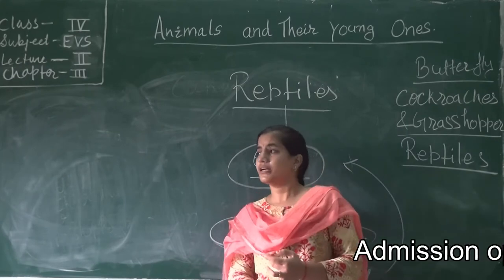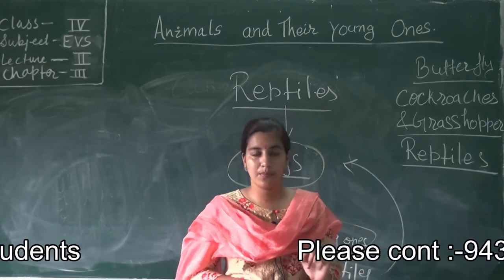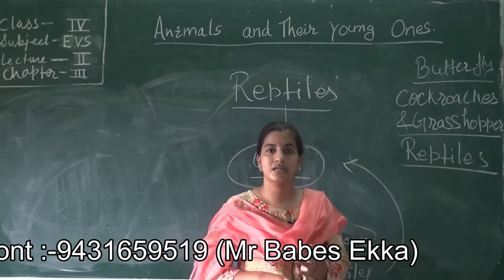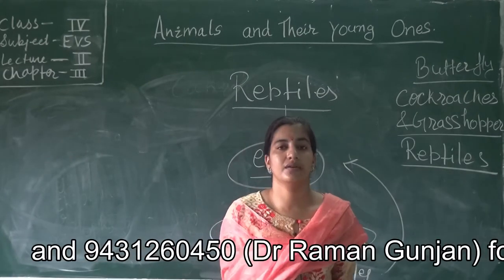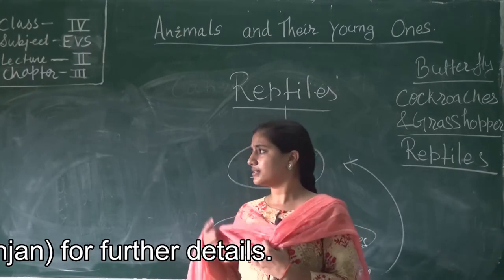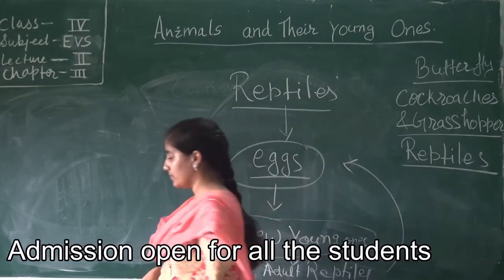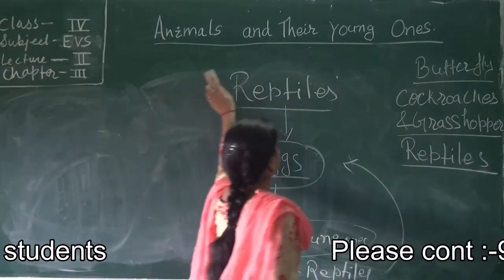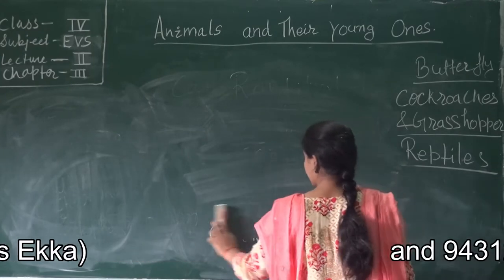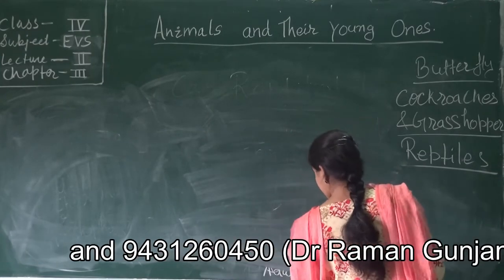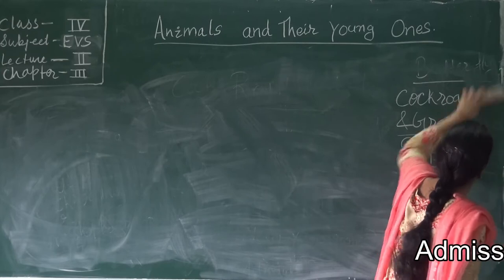This is very clear to you all — what are oviparous animals? The egg-laying animal is termed as oviparous. Different animals like birds, frog, butterfly, hen, reptiles, and even cockroach and grasshopper — all these have been discussed here. These are all oviparous animals — those animals which lay eggs and give birth to their young ones through the laying of eggs.